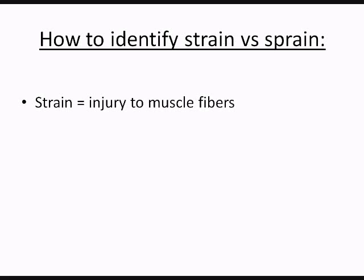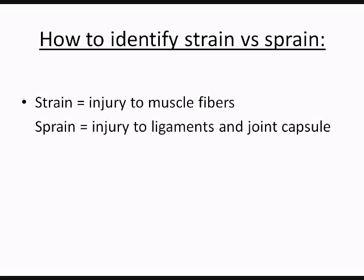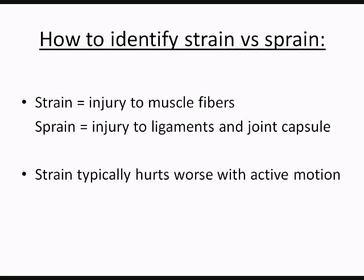So let's talk about how to identify strain versus sprain. A strain injury is an injury to the muscle fibers, so you're going to feel that when you use that particular muscle. A sprain injury is an injury to the ligaments and joint capsule — things inside the joint — so it's going to be a little bit deeper pain, sometimes a sharp pain, and you're going to feel that inside your joint. A strain typically hurts worse with active motion — active motion is when the person is using his or her own muscles to move that joint.